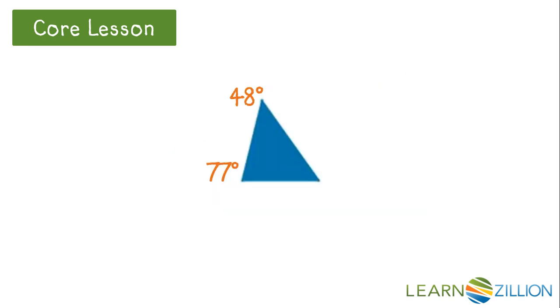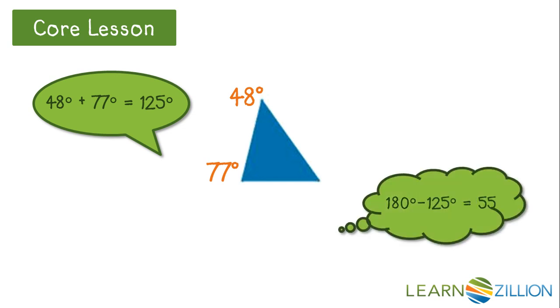So we'll start with the smaller triangle. The angles that we have here are 48 degrees and 77 degrees, and they equal 125 degrees. Remember, the interior angles of a triangle must add up to be 180. So if we take 180 degrees and subtract what we have, the 125 degrees, we get 55 degrees. So the third angle of this triangle is 55 degrees.